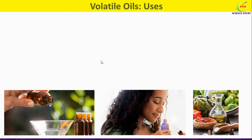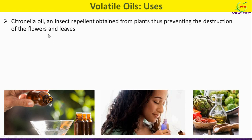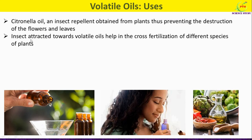Now we will see uses of volatile oils. Citronella oil is an insect repellent obtained from plants, protecting them from harmful insects and preventing destruction of flowers and leaves. Additionally, beneficial insects are attracted towards volatile oils, helping in cross-fertilization of different plant species.